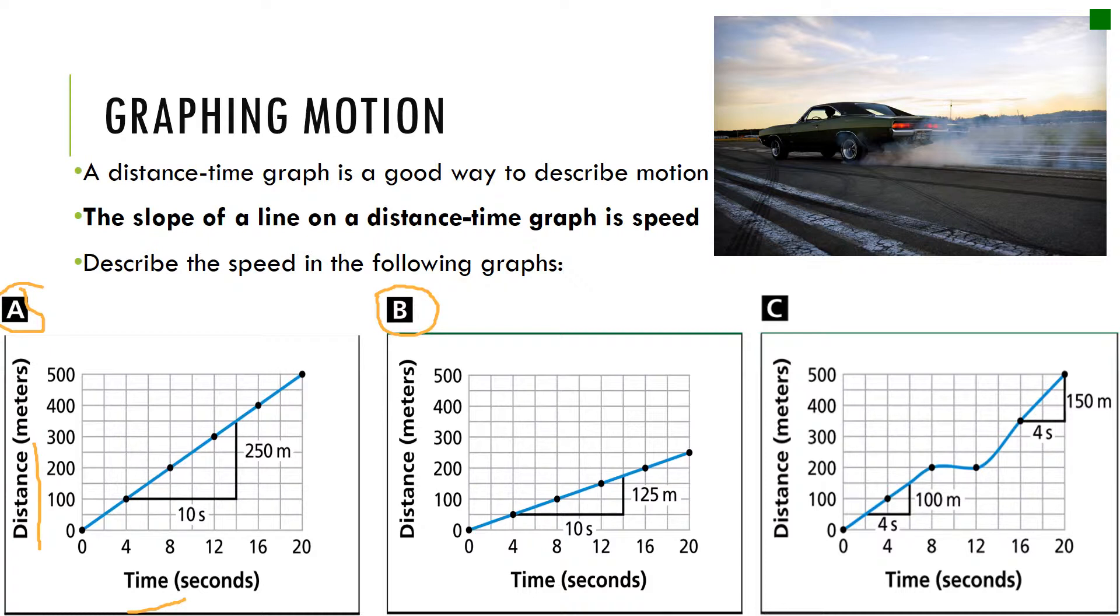Look at graph C. We could calculate a couple of different things. We could calculate instantaneous speed and the way you would do that is you would look at each individual section of the line. So here's one section, here's another section, and then here's another section. You'd look at each slope of the line and we could have three different instantaneous speeds. Or we could calculate the average speed. Check out the segment in the middle here. If you look a little closer, four seconds has passed but no distance has changed. This would be like an object coming to a stop for four seconds and then continuing on its way.